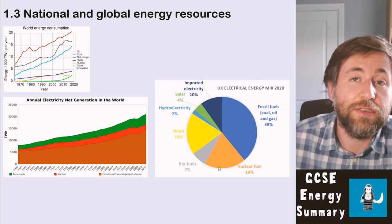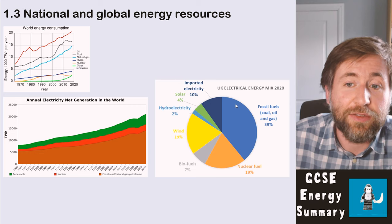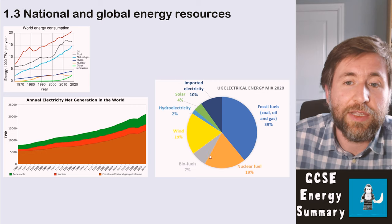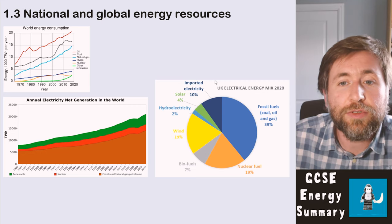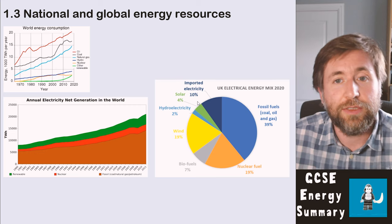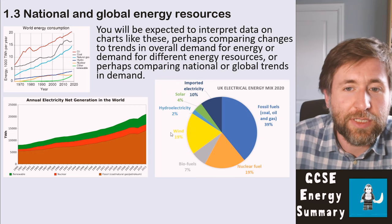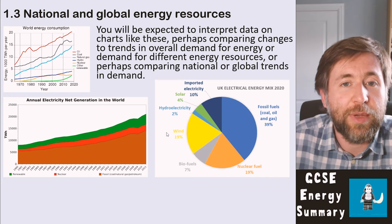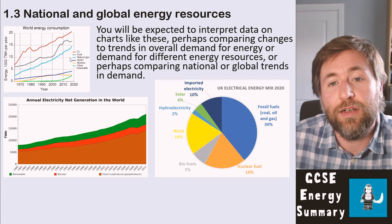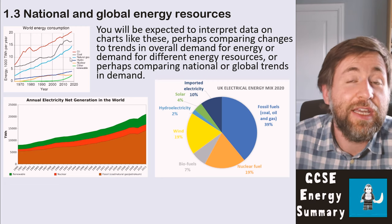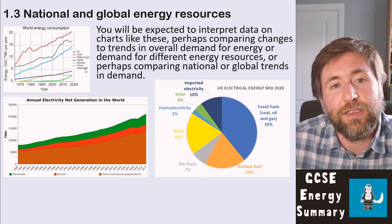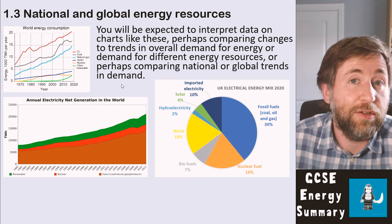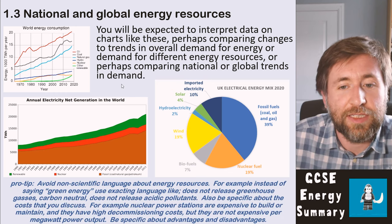The pie chart shows the UK's electrical energy mix specifically — just energy used to generate electricity. You can see a much larger slice is still fossil fuels, then nuclear, then some renewables, and also a slice representing energy imported from other countries. What you need to be able to do with these charts is spot trends, compare changes, or compare overall demand between different sources — likely as a four or six mark written answer where you take data and make comparisons and conclusions.